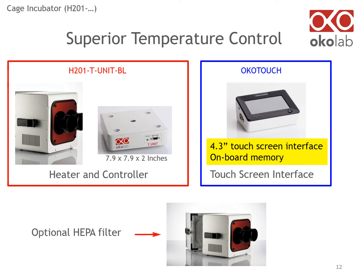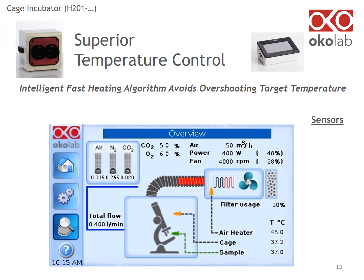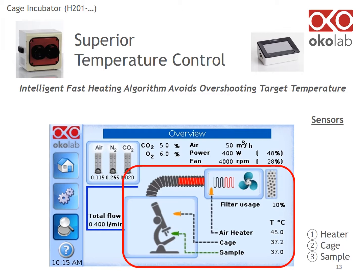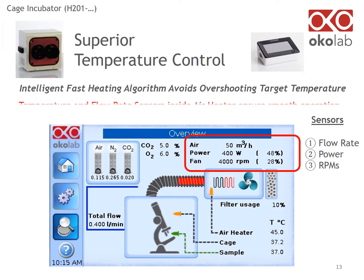The heater can be equipped with an optional HEPA filter. The heating system is equipped with sensors monitoring the temperature inside the heater, the cage, and the sample. Additional sensors monitor the airflow, power of the heater, and speed of the fan. All data is processed by the OkoTouch algorithm, which adjusts each component, ensuring smooth operation and avoiding overshooting the target temperature.